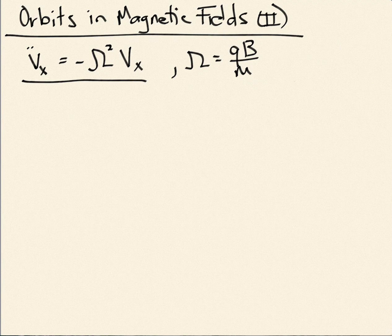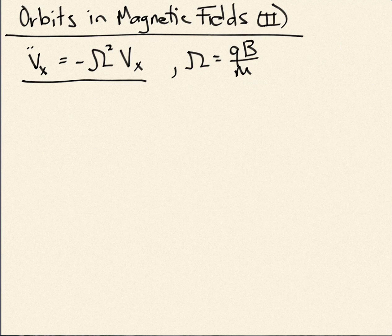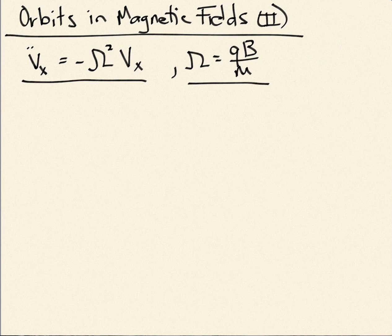I'm going to continue through with the mathematics here, and in class, and a little bit in the video here, I'll try to give you physical intuition for why the orbit behaves the way it does. Now, this constant omega is qB over m. This is the gyrofrequency.